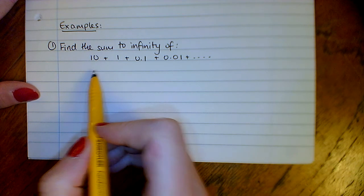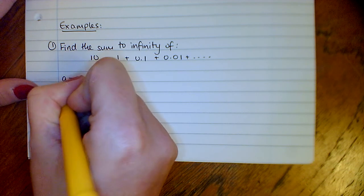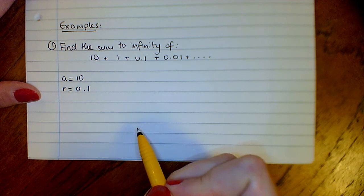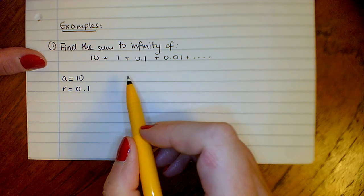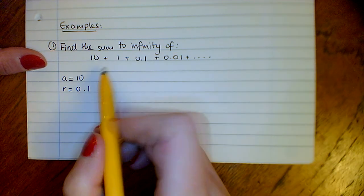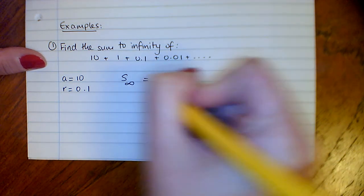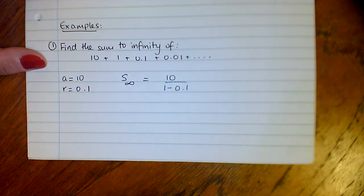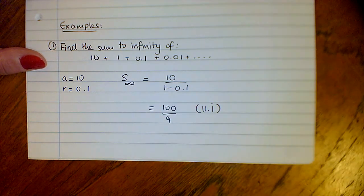We'll have a look at a couple of examples. Find the sum to infinity of 10 plus 1 plus 0.1 plus 0.01. Our first term is 10, and our ratio is a tenth, or 0.1. That means sum to infinity will exist because the ratio is between minus 1 and 1. You can see your terms are getting smaller and smaller, so you're adding on a smaller amount each time. The sum to infinity is A over (1 minus R), so 10 over (1 minus 0.1), and that is 100 over 9, or 11.1 recurrent.